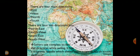You can see on the compass: North-East lies between North and East, North-West lies between North and West, South-East lies between South and East, and South-West lies between South and West. Sailors use a compass to find directions while sailing.